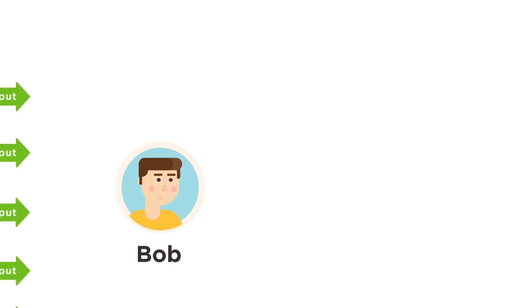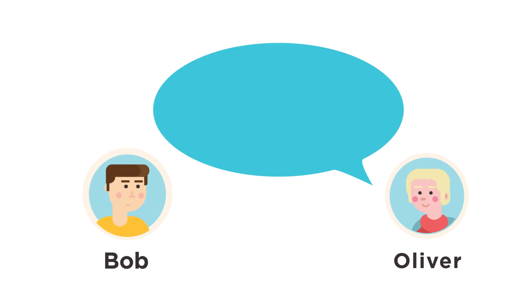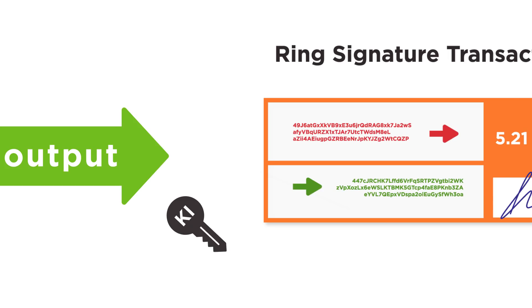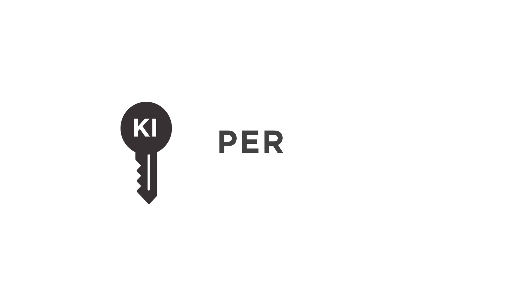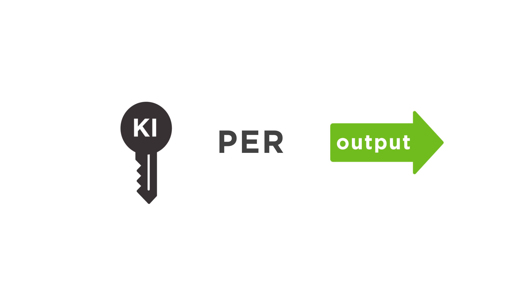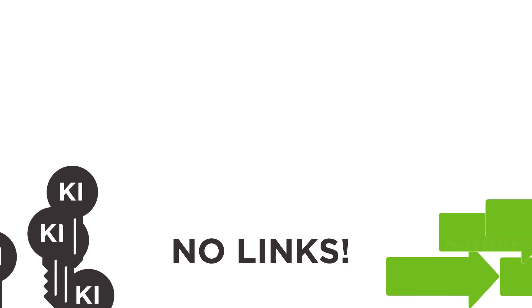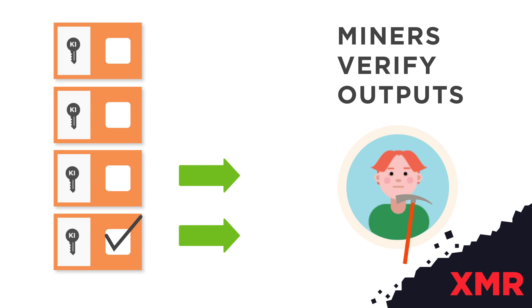You may now be asking yourself, if there is no way for a third party to verify which output is being spent, what would prevent someone from spending the same output twice? This potential issue is addressed by the use of key images. A key image is a cryptographic key derived from an output being spent, and is made part of every ring signature transaction. There can exist only one key image for each output on the blockchain. Yet due to its cryptographic properties, it is not possible to determine which output created which key image. A list of all used key images are maintained in the blockchain, enabling miners to verify that no outputs are spent twice.